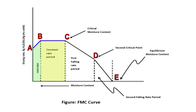The third stage is the time corresponding to section C–D, representing the first falling rate, also called unsaturated surface drying. The rate of drying falls drastically from point C to D. During this period, the surface water is no longer replaced fast enough to maintain a continuous film on the surface. Dry spots begin to appear and the rate of drying begins to fall off. Point D is referred to as the second critical point, at which the film of surface water is completely evaporated.